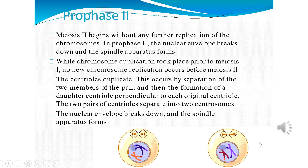In prophase 2, meiosis 2 is initiated immediately after cytokinesis, usually before the chromosomes have fully elongated. In contrast to meiosis 1, meiosis 2 resembles a normal mitosis. The nuclear membrane disappears by the end of prophase 2, the chromosomes align and become compact, the nuclear envelope breaks down, and the spindle apparatus starts formation.